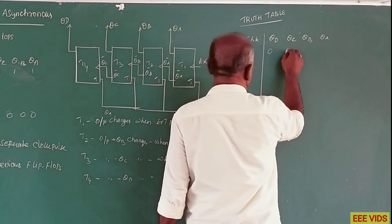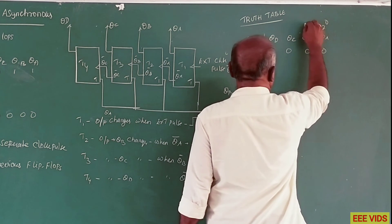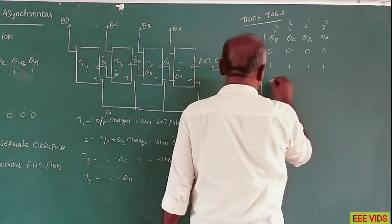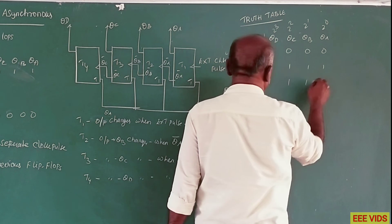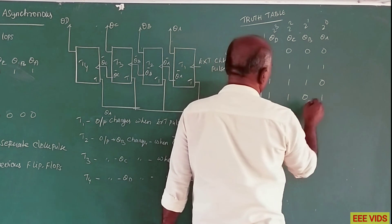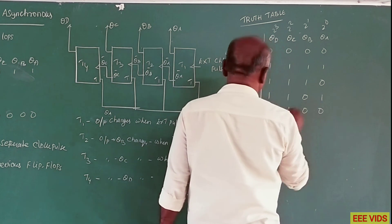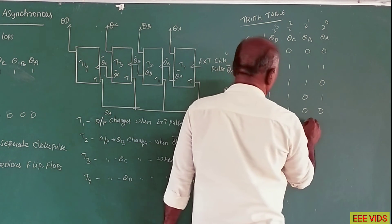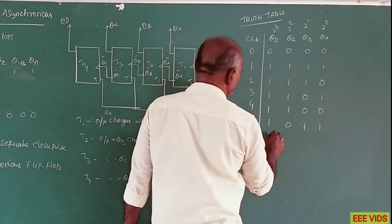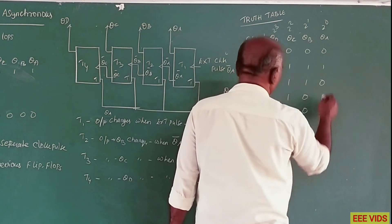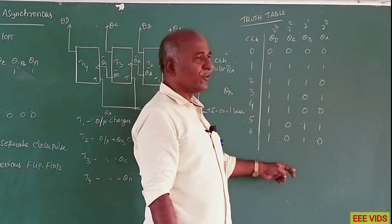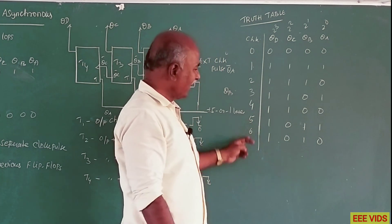At clock pulse 0: QD QB QC QA = 0000. First pulse: 1111 (which is 15). Second pulse: 1110 (14). Third pulse: 1101 (13). Fourth pulse: 1100 (12). Fifth pulse: 1011 (11). Sixth pulse: 1010 (10). The pattern for QA alternates 0,1,0,1; for QB it is 0,0,1,1; for QC it is 0,0,0,0,1,1,1,1 pattern — counting down from 15 to 0 over 16 pulses.